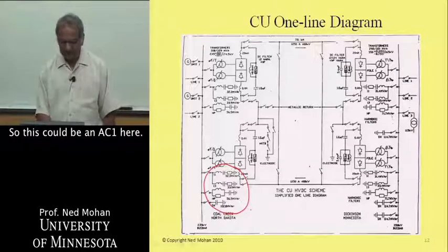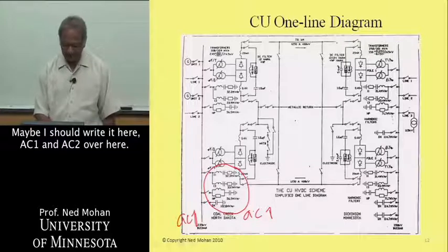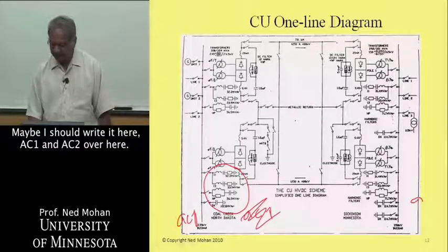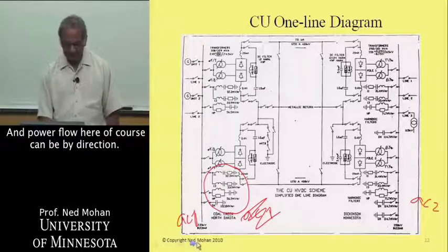We cannot let that go on to the AC system. This could be AC1 here, and AC2 over here. Power flow here can be bidirectional.